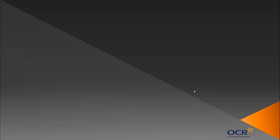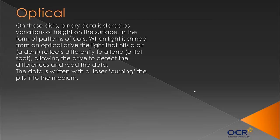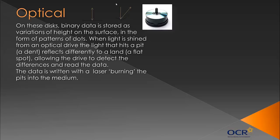Let's look at three technologies used in modern secondary storage devices. First is optical: on optical disks, binary data is stored as variations of height on the surface. Everything on the computer is represented in binary — zeros and ones. If you look very closely at an optical disk you'll see little dots. When light is shone from an optical drive, light hitting a pit — a dent — reflects differently to a land — a flat spot. This allows the drive to detect the differences and read the data. A flat bit reflects straight back, representing a one; a dent reflects the light away, representing a zero. CDs, DVDs, and Blu-ray discs are all examples of optical storage.